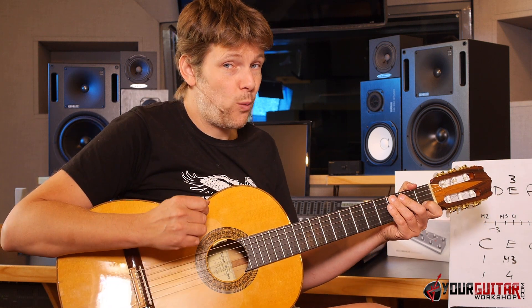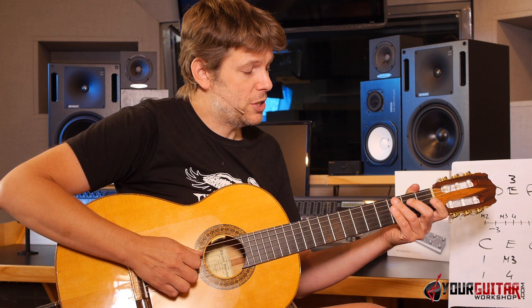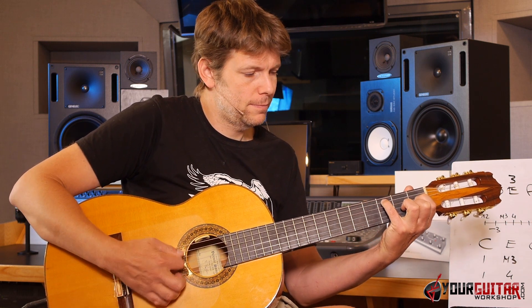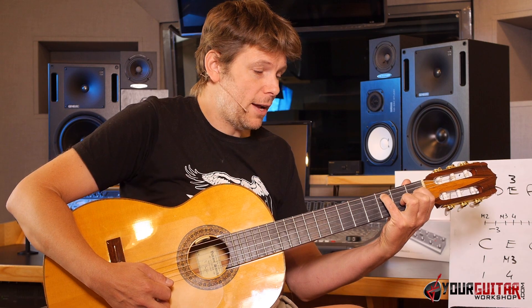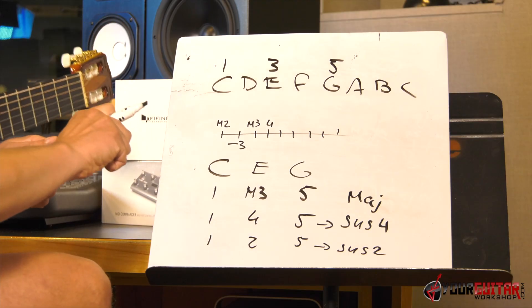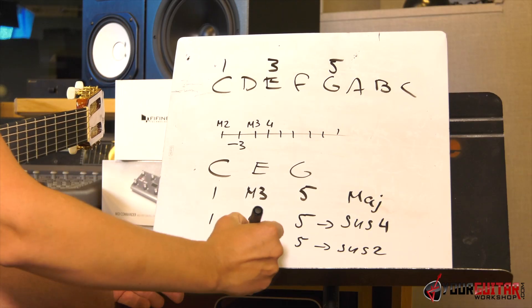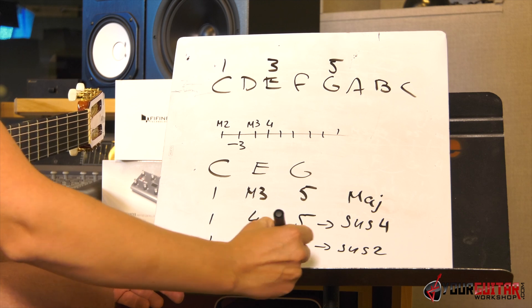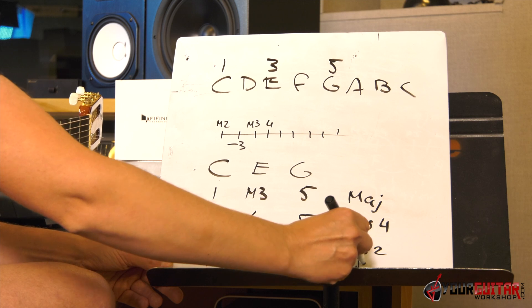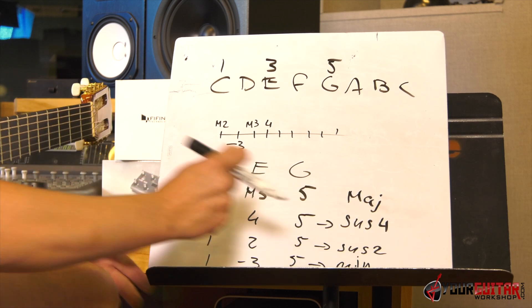And that leaves us with one more, which is our minor third. It'll be a bit tricky to play, and that is our C minor chord. So we got one, minor third, five.